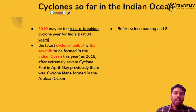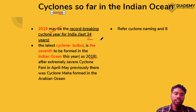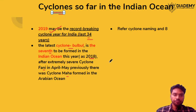Looking at the cyclones that have occurred in the Indian Ocean so far, 2019 has been a record year with the highest number of cyclones, similar to 2018 — the highest in the last 34 years. Recent cyclones include Cyclone Bulbul, which was the 7th one in the Indian Ocean. Previous cyclones include Fani in April-May and Cyclone Maha in the Arabian Sea. Please remember the 8 countries that are participating in the cyclone naming convention.